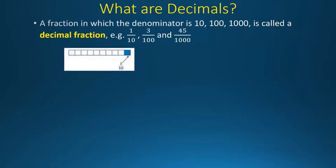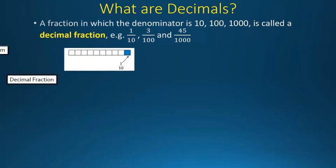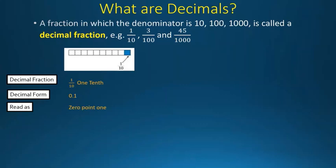As you can see here in this diagram, there are 10 blocks or cubes which come together to create a line, making 10 cubes. We have one shaded cube, that is 1/10. The decimal fraction is 1/10, the decimal form is 0.1, and it is read as zero point one.